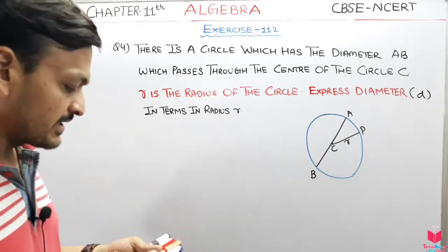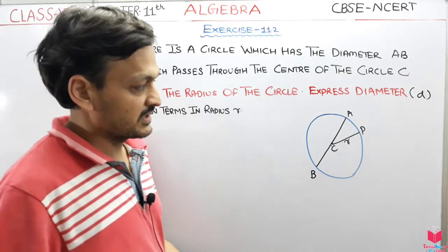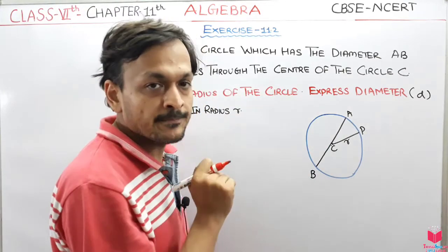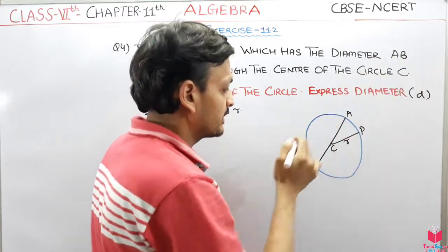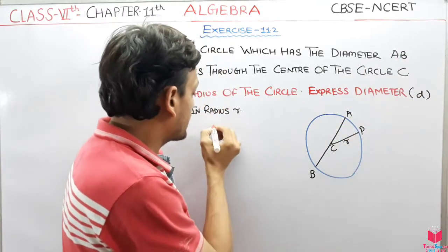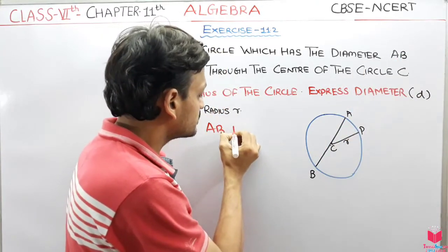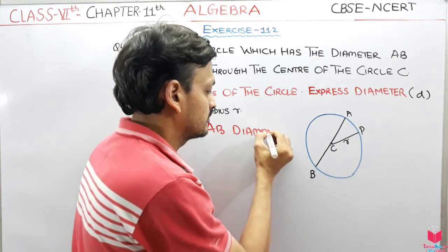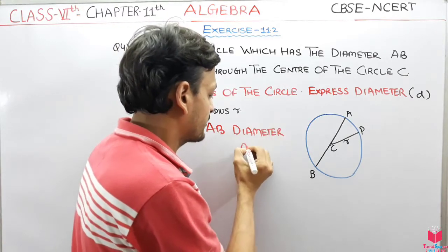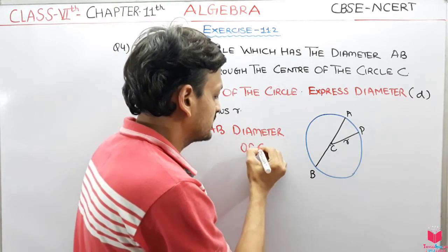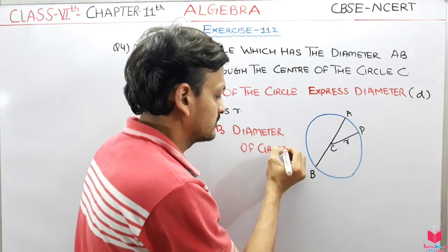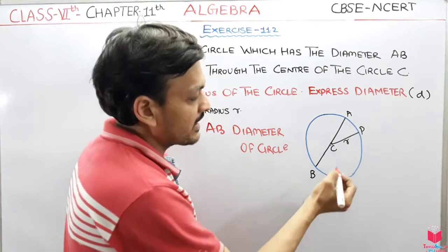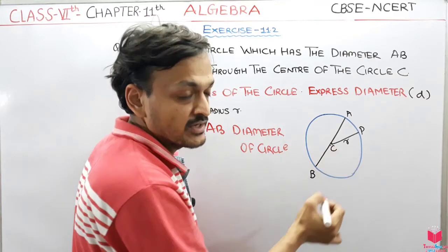Question में given को पहले समझते हैं। यह आपके पास एक circle दिया हुआ है। उसने क्या कहा? AB क्या है आपके पास? Diameter of circle। और C क्या है आपके पास? Center of the circle।